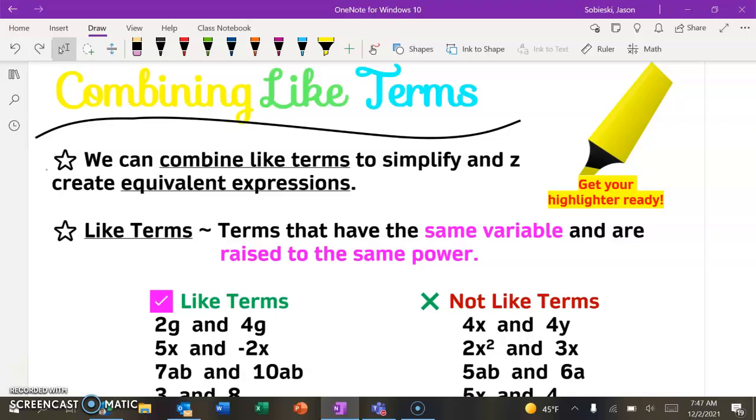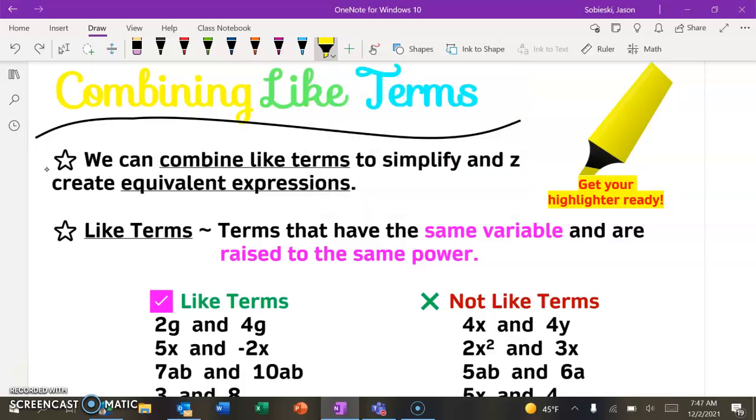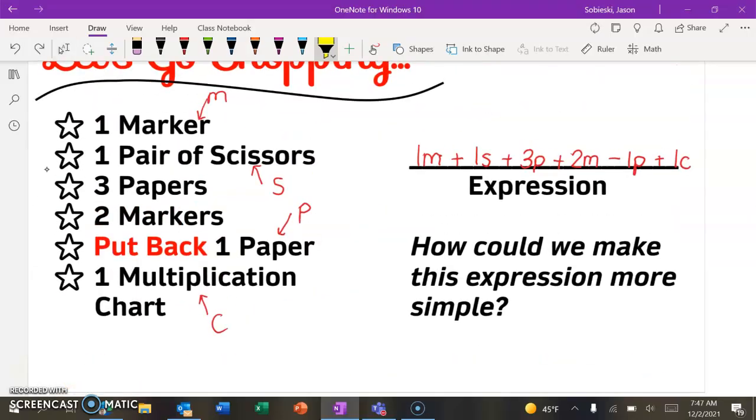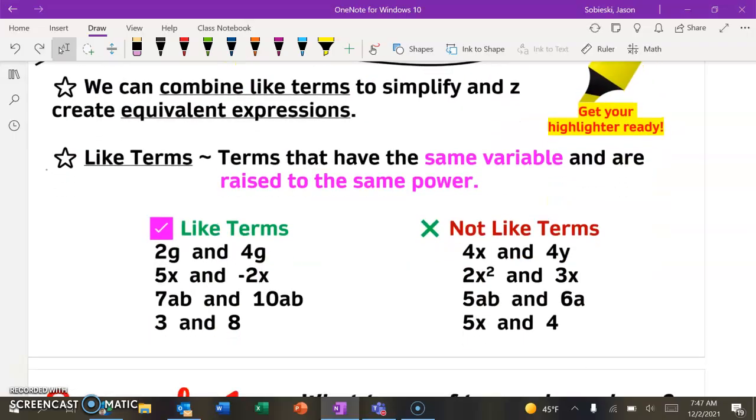So let's take a look at what it means to combine like terms. So there are a lot of bright colors on this page. And there's a point to that. When we start doing these examples, we want you to really use the highlighter. OneNote gives you all of these possibilities for highlighters. You could pick even more colors, but use that tool. It's really going to help you. So we can take all of the terms, the pieces of the expression that are similar, and we can just combine them. So like in this example, if we picked up all of the markers in one trip, we would have saved ourselves a few steps. If we only took two papers at once, we wouldn't have had to go back to return the one. So we're going to talk about how to make a more efficient trip. So when it says like terms, the things that we can combine, they have to have the same variable and also need to be raised to the same power.